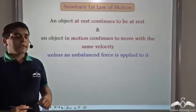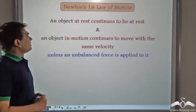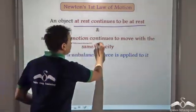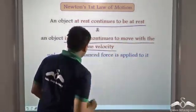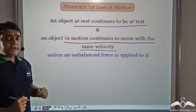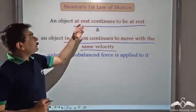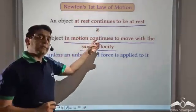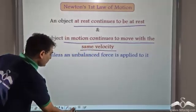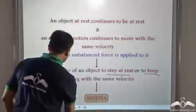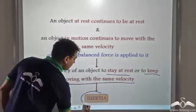Before I answer this, let us visit Newton's first law. Newton's first law of motion states that an object at rest continues to be at rest and an object in motion continues to move with the same velocity unless an unbalanced force is applied to it. So one way to interpret this is that an object at rest has a tendency to be at rest and an object in motion has a tendency to be in motion with the same velocity, and this tendency of an object to stay at rest or to keep moving with the same velocity is known as inertia.